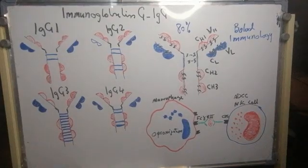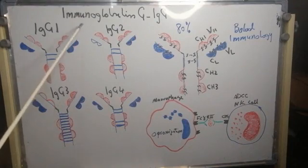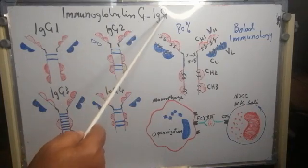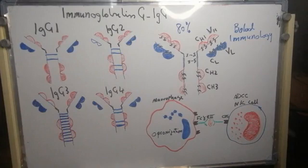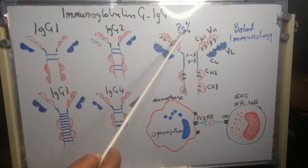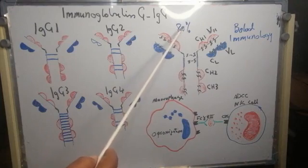In today's video lecture, I'm going to talk about immunoglobulin G or IgG antibody. It is the most abundant class in serum and constitutes about 80% of the total serum immunoglobulins.